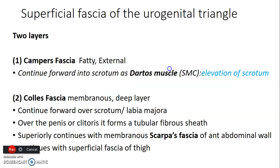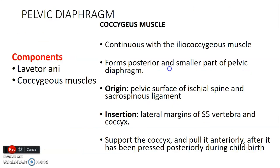The superficial fascia of the urogenital triangle has two layers. We have the Camper's fascia, which is the fatty layer and is external — it continues forward into the scrotum as dartos muscle which elevates the scrotum. And also we have the Colles' fascia, which is the membranous deep layer that is continuous with the membranous layer of the scrotum and labia majora, the fibrous sheath of the penis and clitoris, and also the Scarpa's fascia of the anterior abdominal wall.